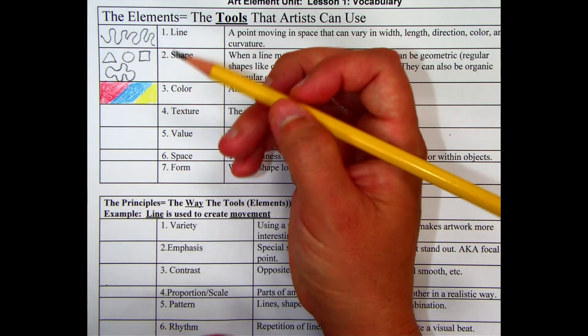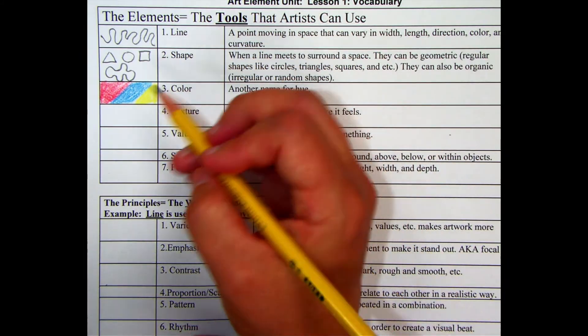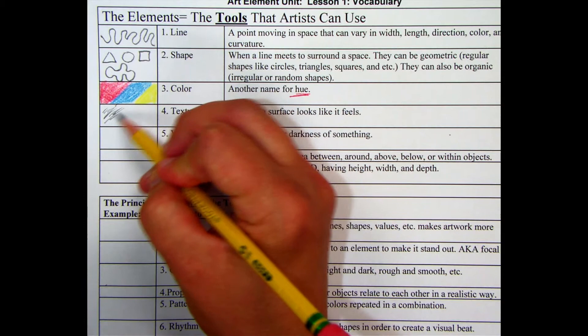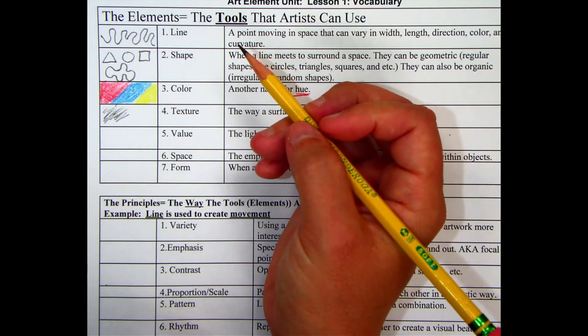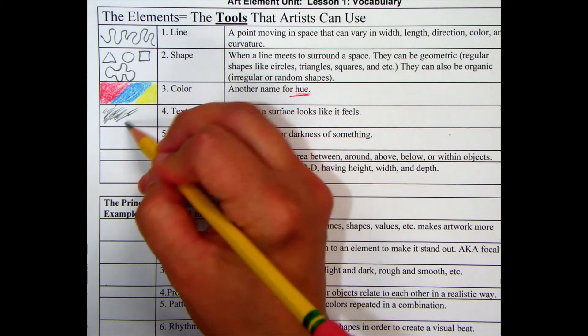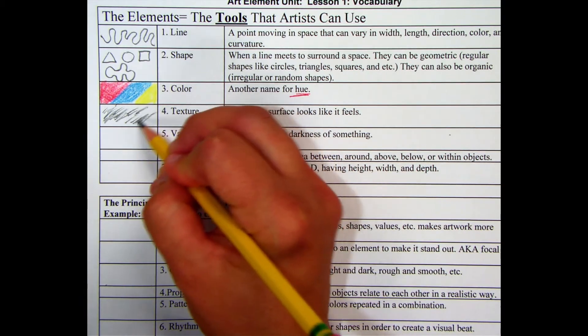Another important element of art is texture. Is it rough? Is it furry? Is it smooth? So just add some sort of texture inside of this box.